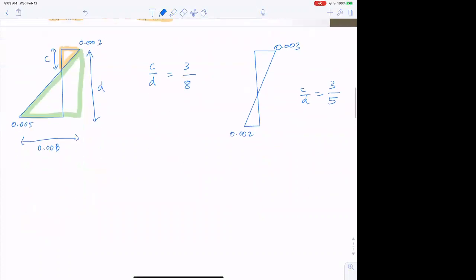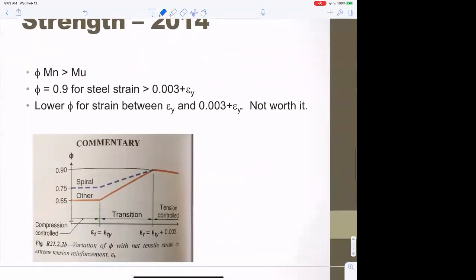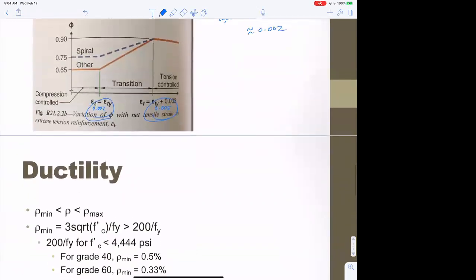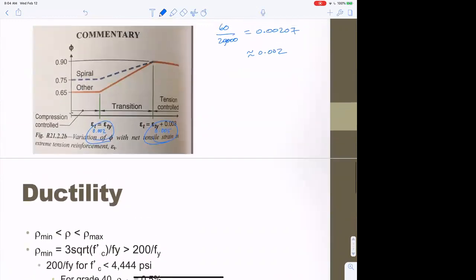This changed in 2014. It used to be 0.002 and 0.005, but now it's the yield strain and yield strain plus 0.003. For grade 60, the yield strain is 60 ksi over 29,000 ksi, which is 0.002. So you get the same numbers - 0.002 and 0.005. But this way, if you have grade 40 or grade 50, those numbers can change appropriately.